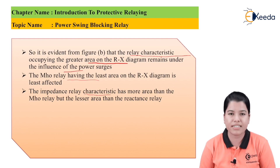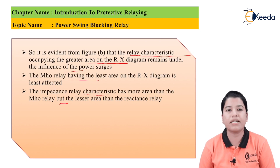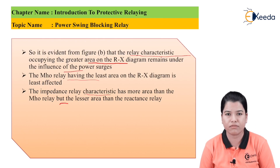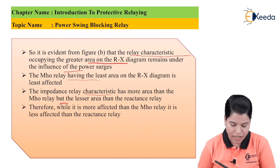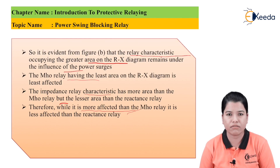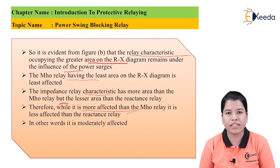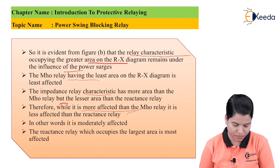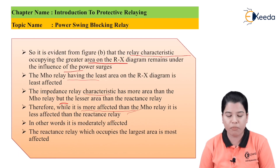The impedance relay characteristic has more area than the Mho relay but less area than the reactance relay. So the impedance relay will be affected more than the Mho relay by power surges, but not as much as the reactance relay — it is moderately affected. The reactance relay occupies the largest area and hence is the most affected by power surges.